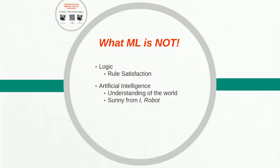Machine learning is not artificial intelligence in the sense that it has an understanding of the world. When we picture artificial intelligence, we're typically thinking about something like Sonny from iRobot — a robot who starts to display emotions like anger or love. Artificial intelligence right now isn't able to do that because machine learning doesn't display understanding or emotions in this way.